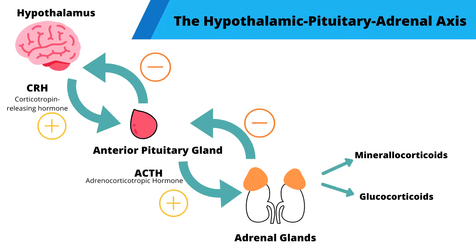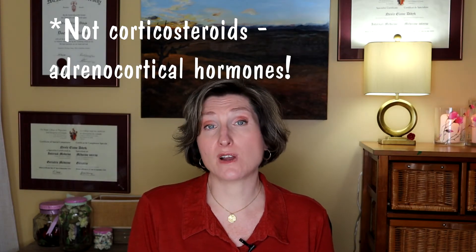We're going to talk about some of the changes that you might see in an older adult with adrenocortical disease. To very simply review the adrenocortical system: there's a pathway from the brain to the pituitary gland to the adrenal gland. The adrenal gland releases hormones, including mineralocorticoids and glucocorticoids, as well as some sex hormones, which we aren't really going to talk about. The main functions of the corticosteroids are to absorb sodium, excrete potassium, and manage the body's response to stress.